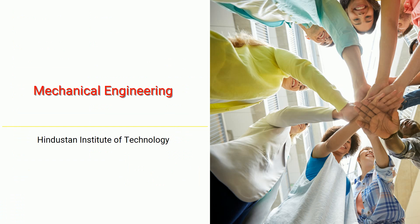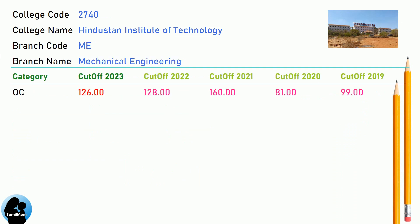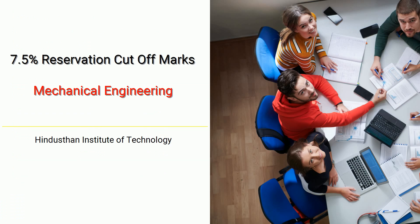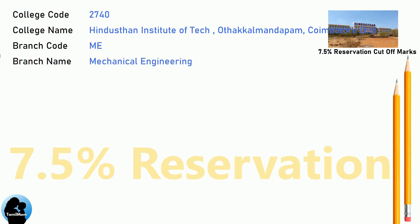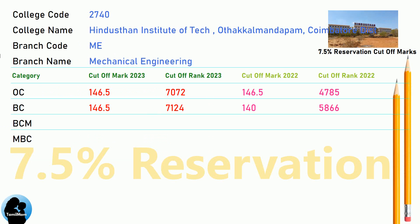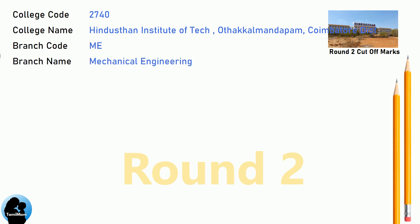DNA Cut-Off for Hindustan Institute of Technology in Mechanical Engineering. DNA 7.5 Reservation Cut-Off for Hindustan Institute of Technology in Mechanical Engineering. DNA Round 2 Cut-Off for Hindustan Institute of Technology in Mechanical Engineering.